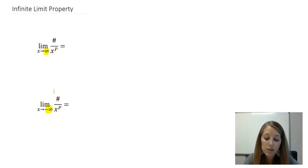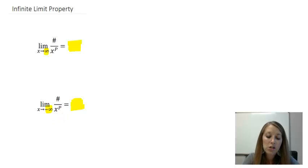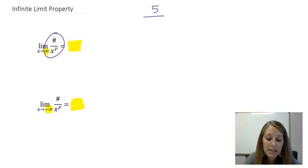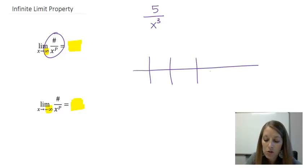Whenever we have something that resembles this format — a constant over x to some power — our limit is always going to end up in the exact same place, and it doesn't matter whether it's positive or negative infinity. To help us figure this out, I'm going to use one of those tables we used back in finite limits to get an estimation and derive the property. So let me give you an example: 5 divided by x to the third.